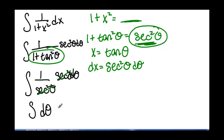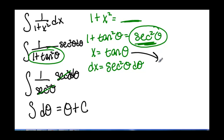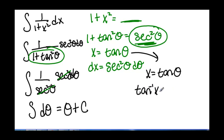Solving that integral, we get theta plus c. But we have to solve for theta. Since x equals tangent of theta, solving for theta gives us theta equals the inverse tangent of x.